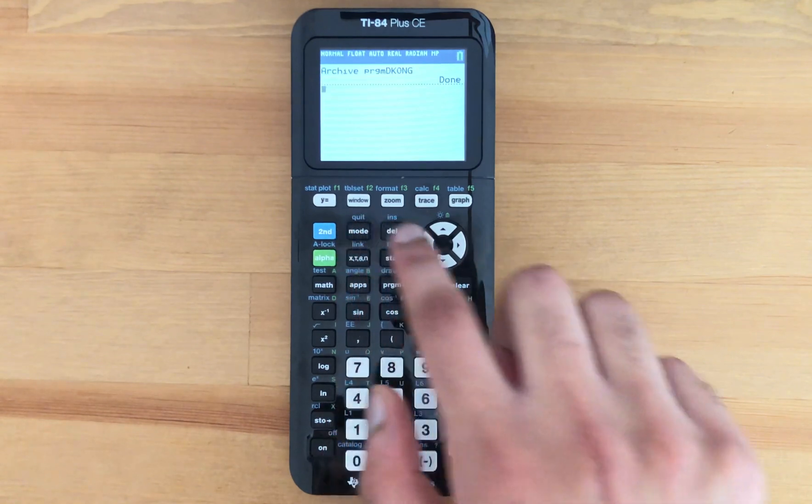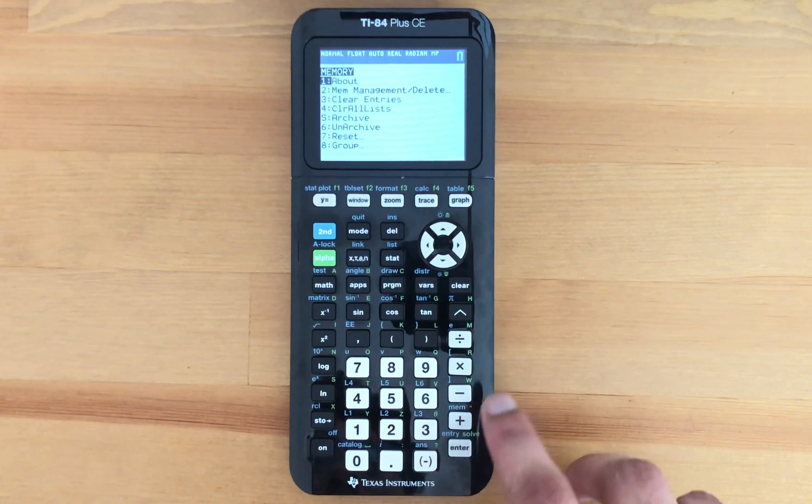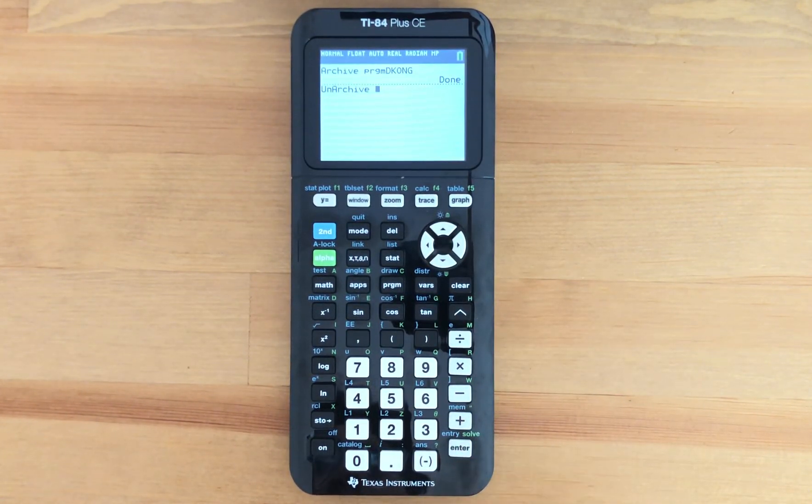So if I want to unarchive that program, what you want to do is hit second memory, scroll down to number six unarchive, press enter, and now we're just going to select the program that we want to unarchive.